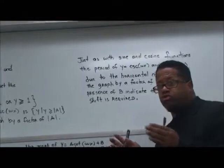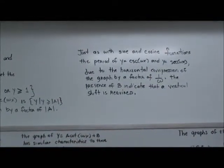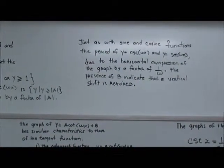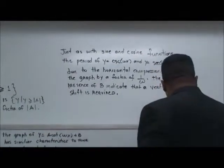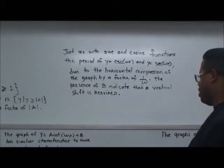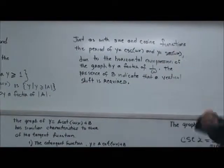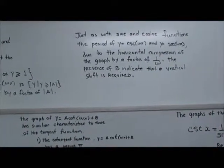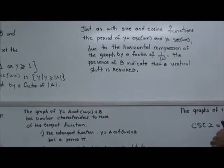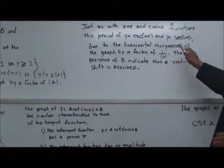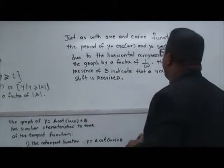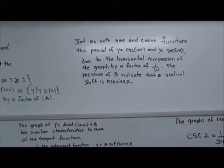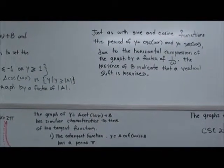Not the amplitude, though, but it's used as a magnitude to stretch the graph of the tangent and cotangent. So, what do we have here? We have, just as with sine and cosine, the functions of period of y equals cosecant omega x and y equals secant omega x. Due to the horizontal compressions here, we're talking about the horizontal compressions again. By the factor of 1 divided by omega, the presence of b indicates the vertical shift is required. So, remember,